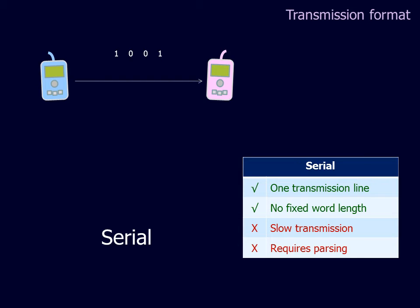Serial transmission has the advantage of requiring only one transmission line, and can equally accommodate any word length. It is, however, the slowest format, and the transmitted data needs to be parsed by the receiver into the required word length.